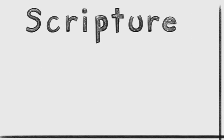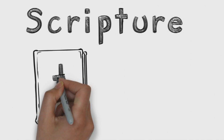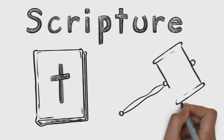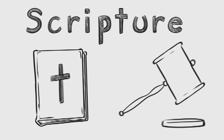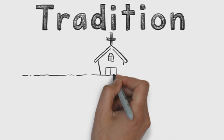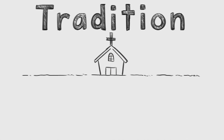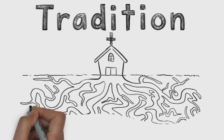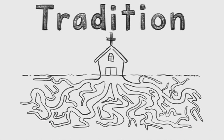Scripture is the most important part of the Quadrilateral. It is the standard against which the other sources are judged. Tradition represents the collected wisdom of the Church over the centuries. It keeps our theology connected to ideas that have deep roots.